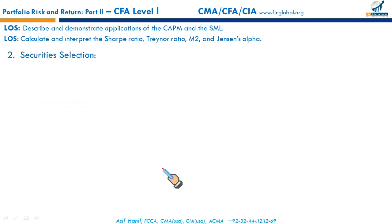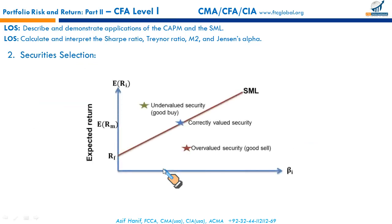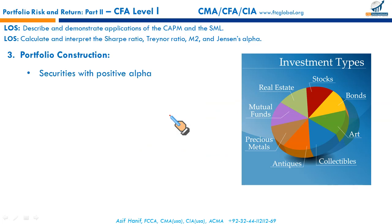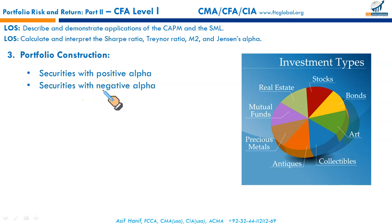The next area is security selection. If an asset is correctly priced, it lies on the security market line. Assets that are undervalued will be above the SML and are good buys; assets that are overvalued will be below the SML and are good sells. For portfolio construction: securities with positive alpha relative to the market index should be included; those with negative alpha should be excluded. Securities with higher alpha should be given greater weights in the portfolio.